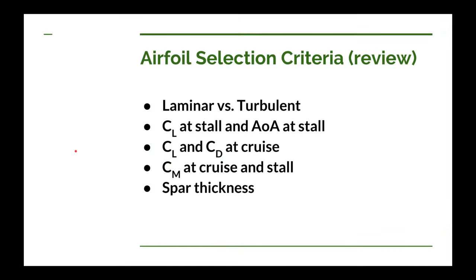Let's have a quick review of the selection criteria that we will use in selecting our airfoil. We have to decide between a laminar and a turbulent boundary layer on our airfoil. A laminar should give us less drag, but a turbulent should give us a higher angle of attack at stall and should give us a higher coefficient of lift. So we're going to have to come up with a decision on whether we want to go with laminar versus turbulent.